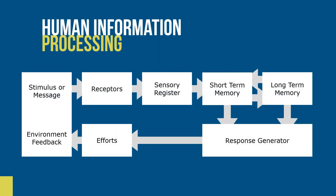This figure shows a model of information processing. Information processing theories propose that information or messages taken in by the learner undergo several transformations in the human brain.